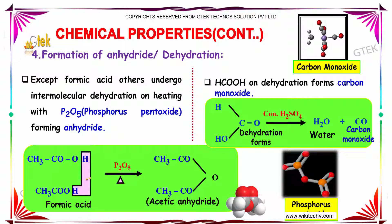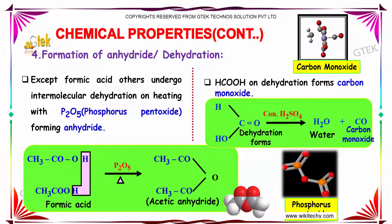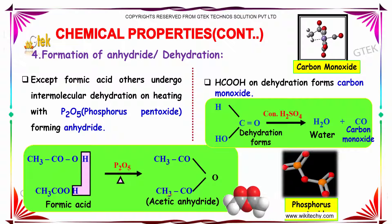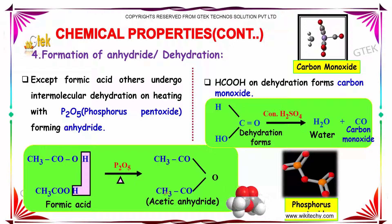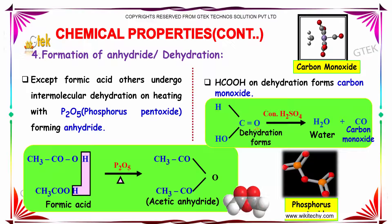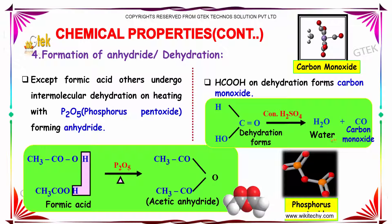The following reaction can be seen here. Formic acid when reacted in the presence of P2O5 on heating produces acetic anhydride, whereas dehydration in the presence of concentrated H2SO4 produces water and carbon monoxide.